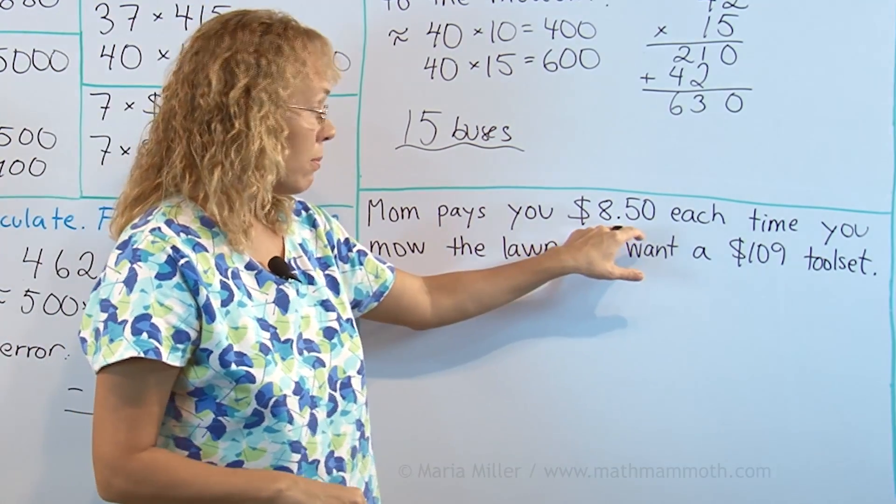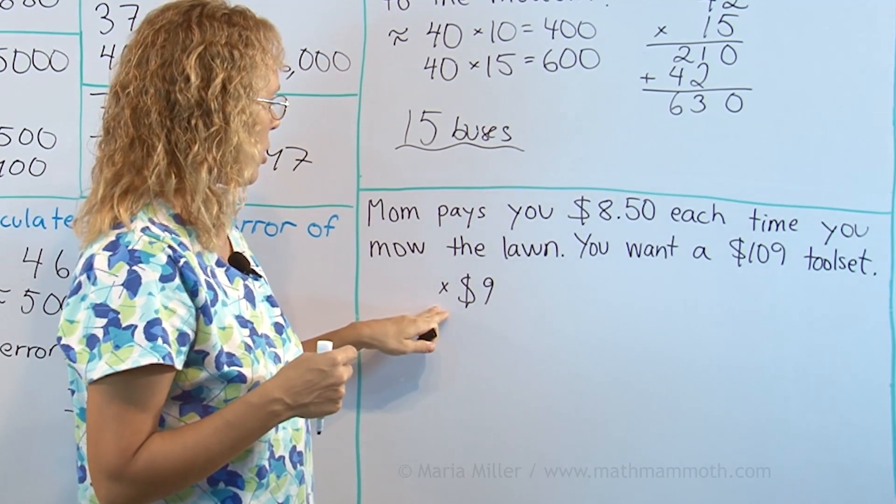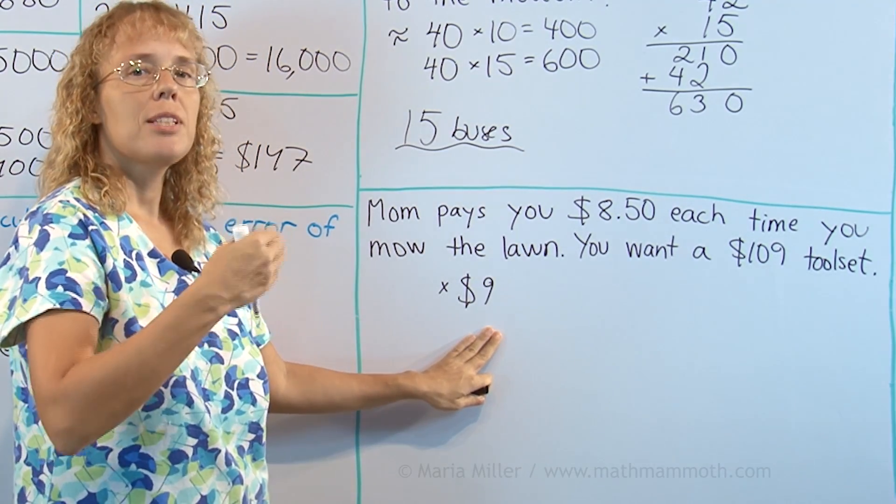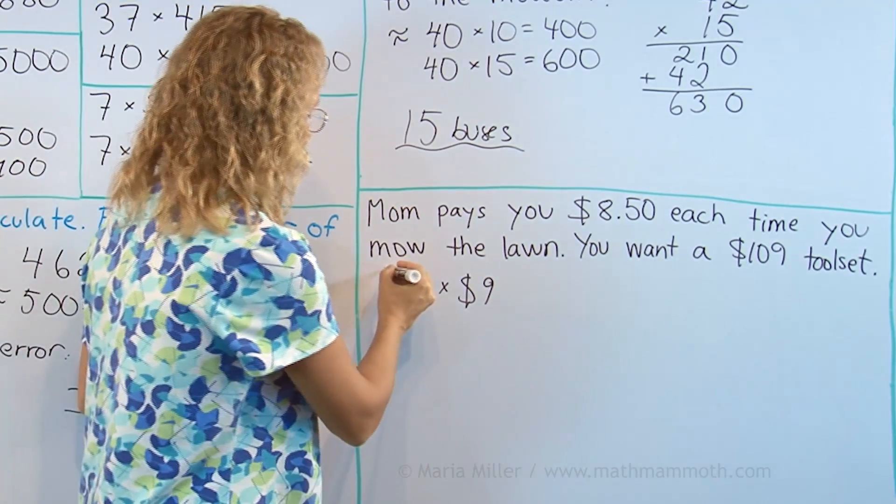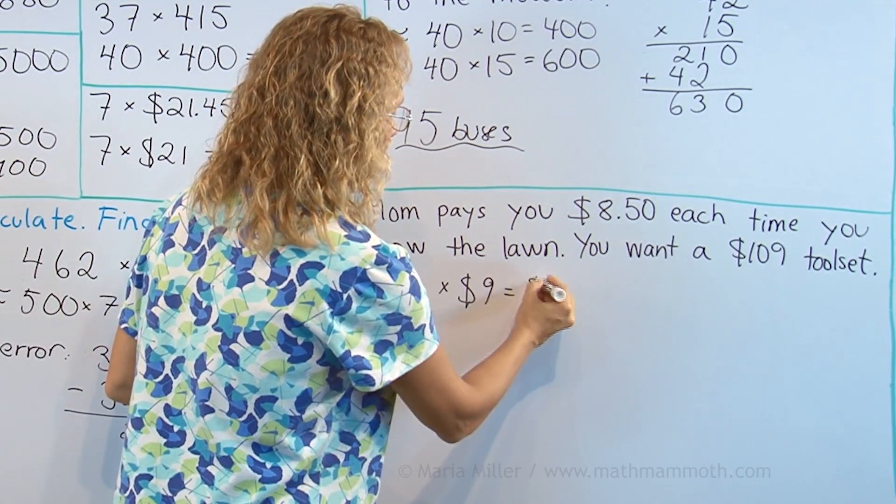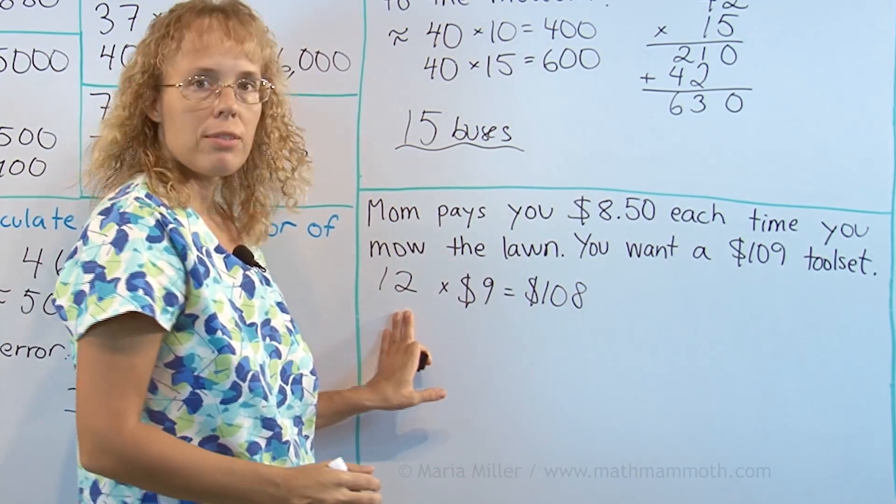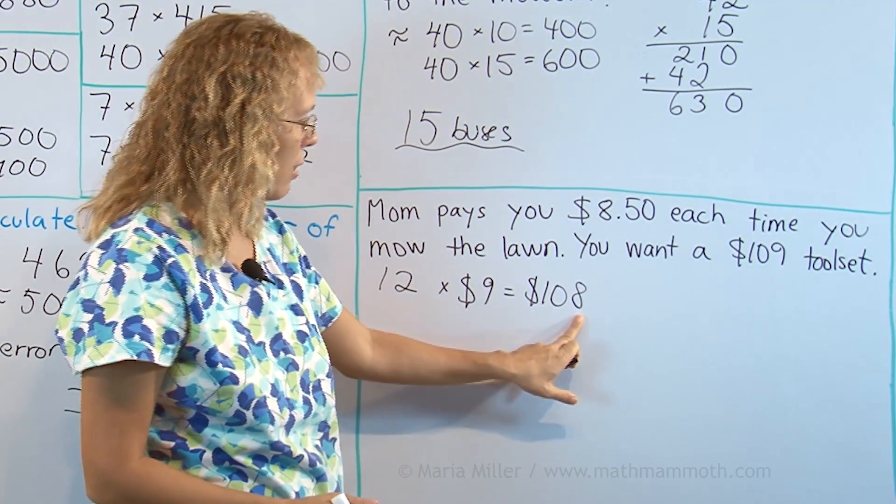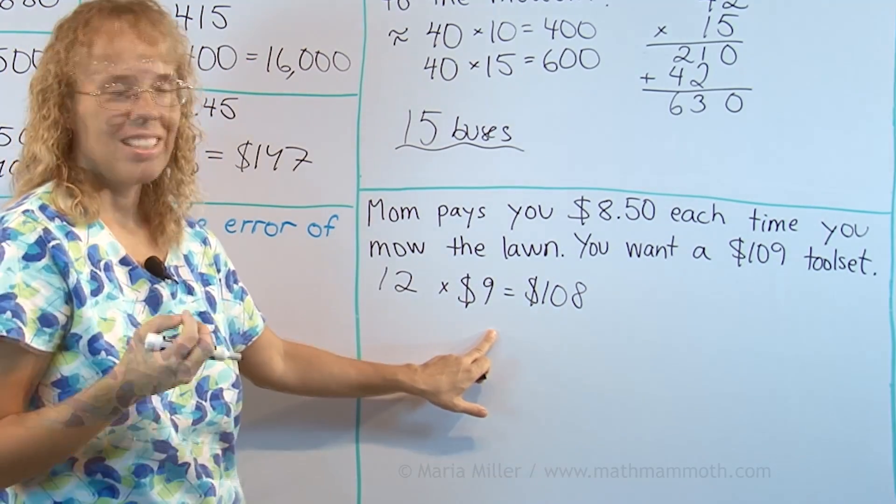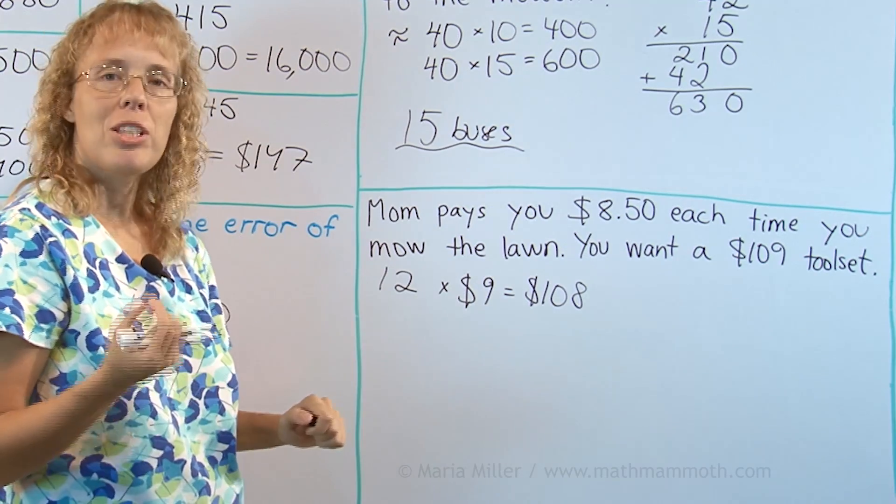We can round this to $9 first of all and then use mental math. For example, 10 times $9 would be 90. 11 times 9, 99. 12 times 9 is coming pretty close. 12 times 9 is $108. So it looks like maybe 12 times. But that's not quite enough. Also, you are not exactly earning $9. You are earning $8.50. So our guess would be maybe 13 times. 13 times should be enough.